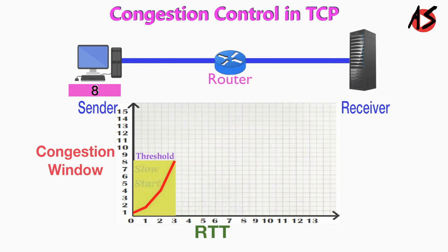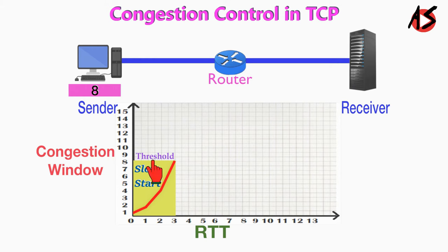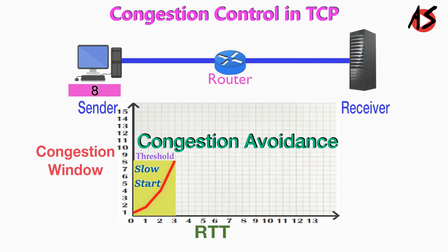Slow start cannot continue indefinitely. There must be a threshold to stop this phase. The sender keeps track of the slow start threshold. When the size of the window in bytes reaches this threshold, slow start stops and TCP goes into the next phase called congestion avoidance.